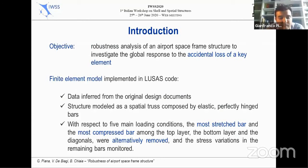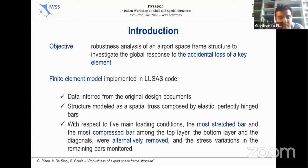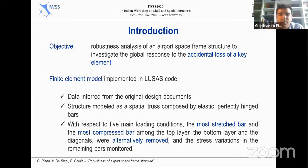Here we present a robustness analysis of an airport space frame structure, aiming at investigating the global response to the accidental loss of a key element. It's a real existing structure, but we will keep the name confidential. A finite element model was implemented based on the original design documents. The structure was modeled as a special truss composed of elastic perfectly hinged bars. With respect to five main loading conditions, the most stretched bar and the most compressed bar among the top layer, bottom layer, and the diagonals were alternatively removed and the stress variations in the remaining bars monitored.